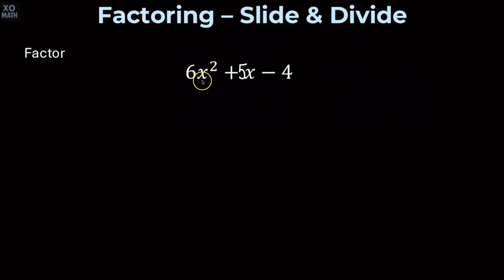Now, let's factor 6x squared plus 5x minus 4. We're going to slide over the 6 through multiplication, and we're going to get the new quadratic x squared plus 5x minus 24.